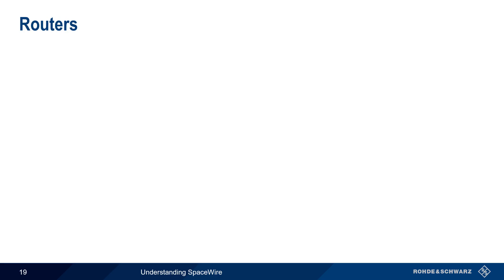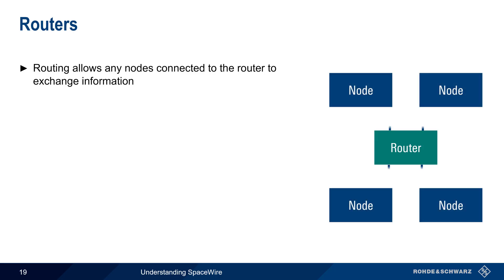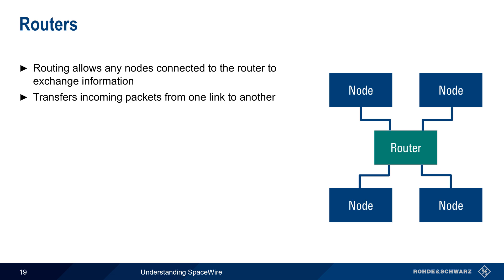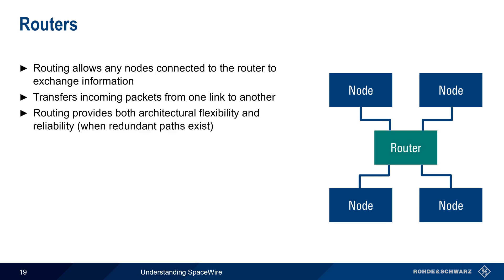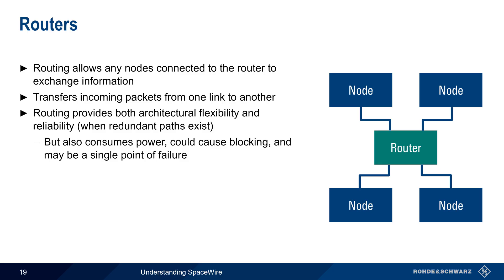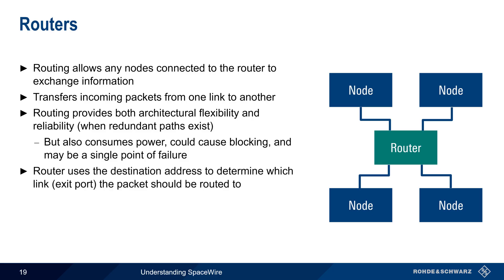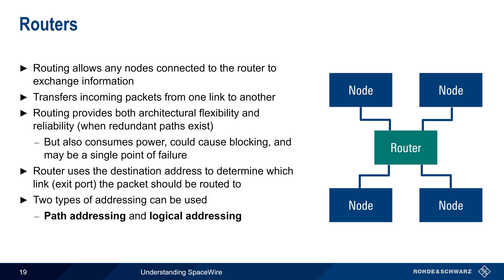Nodes can also be connected via routers. A router has multiple link interfaces and a switch matrix, allowing any nodes connected to the router to exchange information. A router transfers incoming packets from one link to another. Routing provides both architectural flexibility and improved reliability when there are multiple links or paths to a destination. Disadvantages of using routers are that they consume power, can lead to blocked packets, and may also be a single point of failure.